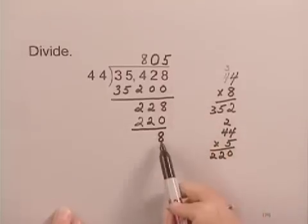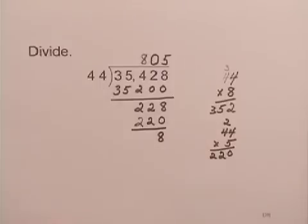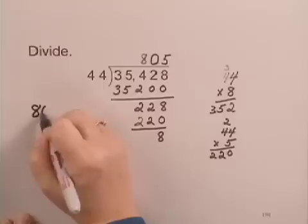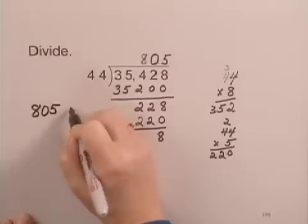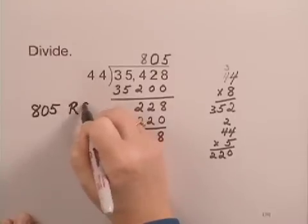Since 8 is less than 44, we're finished, and we have a remainder of 8. So the quotient is 805, and there's a remainder of 8. And that is how you write your answer.